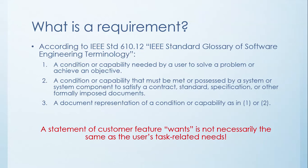That means you have to write it down. You have to remember that a statement of a customer feature want is not necessarily the same as the user's task-related needs. If you go into a requirements solicitation process and just ask the customer what they want, that's actually a very bad idea because you'll end up getting a whole bunch of things that are important to somebody but won't necessarily solve their problem.